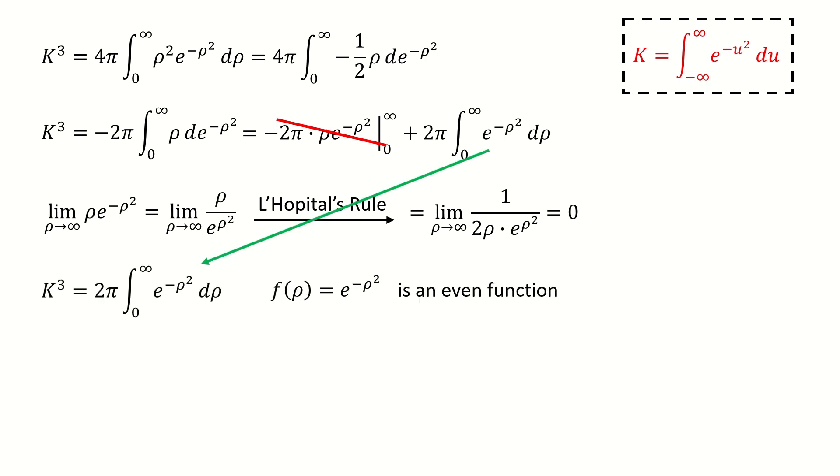Note here, for this integrand function, it's even. So this integral can be written in this way. We can extend the lower limit from zero to negative infinity. Then we put a factor one half in front of this integral to compensate. Next, the two and one half, they cancel out, so we got here.